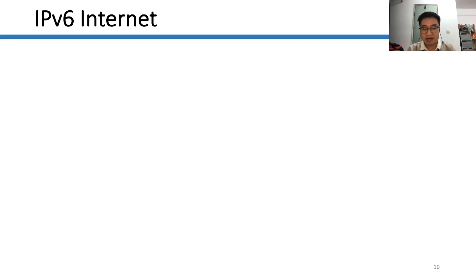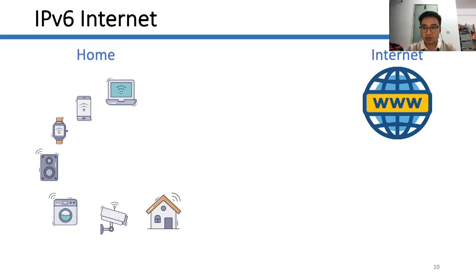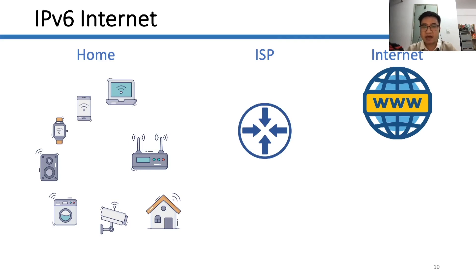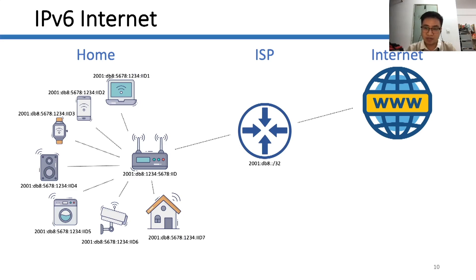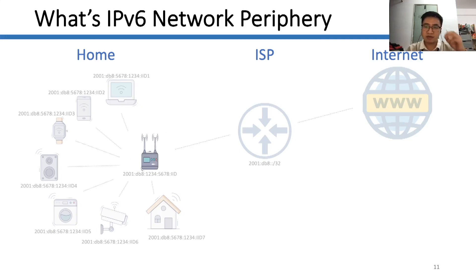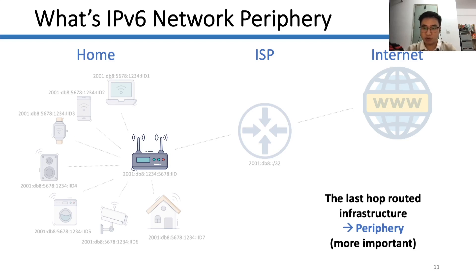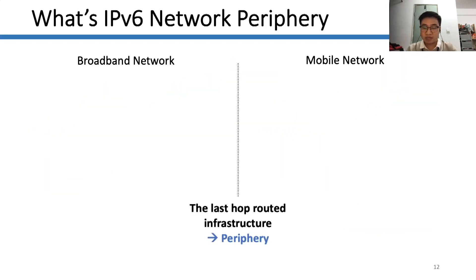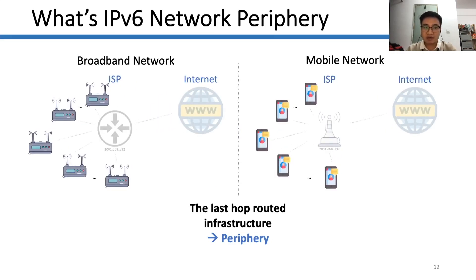In the IPv6 internet, kinds of devices need home routers to access the internet, and the ISP usually assigns IPv6 prefixes rather than addresses. So each home network is a public IPv6 network, and all devices have their public addresses. Among them, the home router, which is the last-hop routed infrastructure, is the periphery that we want to find, and is more important. There are many peripheries in the ISP network. Besides, mobile devices can also turn into peripheries by getting IPv6 prefixes.